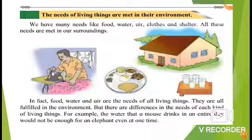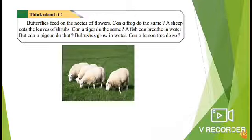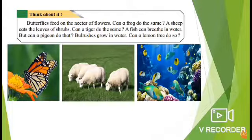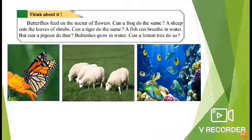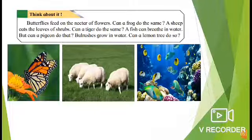For example, the water that a mouse drinks and an elephant drinks will not be the same. Think about it. Butterflies feed on the nectar of flowers — can a frog do the same? A sheep eats the leaves of shrubs — can a tiger do the same? A fish can breathe in water, but can a pigeon do that? Children, if you take a pigeon and put it into water, it will die. Bullrushes grow in water — can a lemon tree do so? If a fish thinks of living out of water and coming on land, will it be able to survive? No, my dear children — it will die because it can only breathe the air dissolved in water.